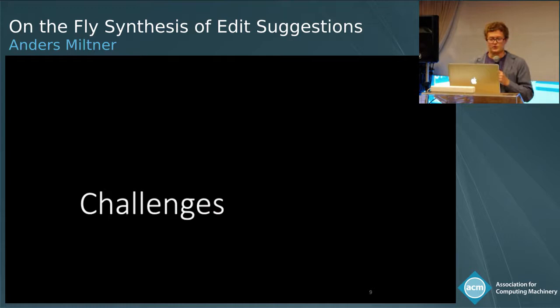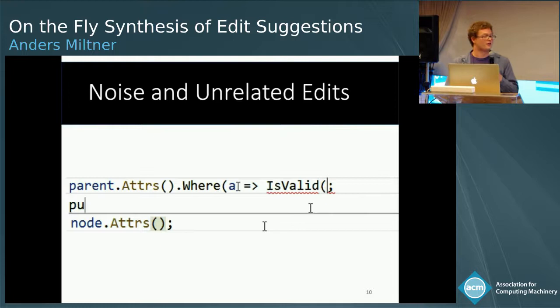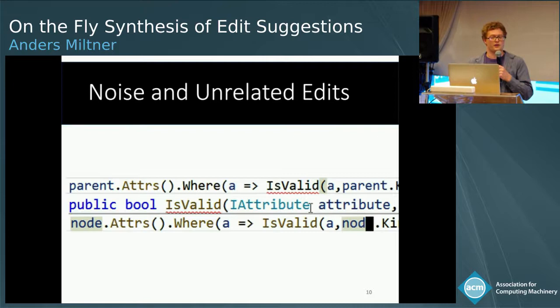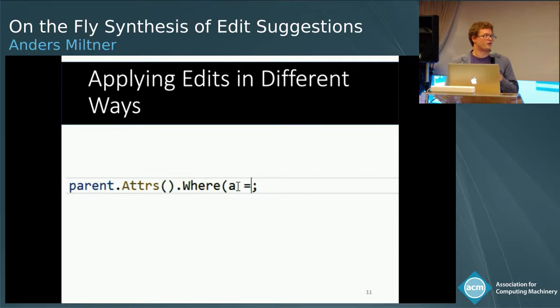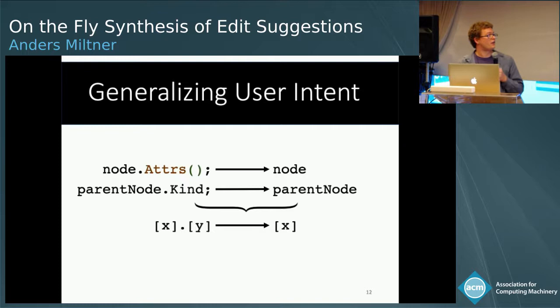We had some challenges in doing this. We had to handle noise and unrelated edits — as I wrote up attrs, I had the first transformation, then I forgot to add is_valid, so I had to write up is_valid and then do the second attribute call. We should be able to handle those unrelated edits in the middle. I also applied edits in different ways: the first time I wrote it manually, but the second time I copied and pasted, then specialized the copy-paste to the current location.